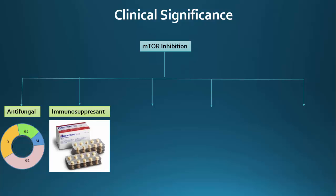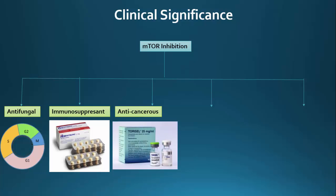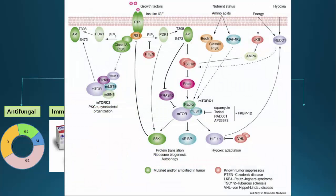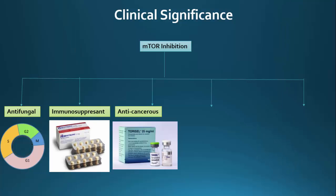mTOR is also found to be anti-cancerous, and other inhibitors of its activity are used in the treatment of some cancers. The proteins that relay signals about nutrient availability are from tumor suppressor genes or are found to be hyperactive in several cancers. Because mTOR ultimately regulates all cell growth, it makes sense that problems at any point in the pathway causing hyperactivation lead to uncontrolled cell growth.